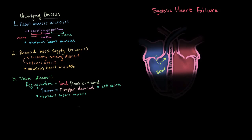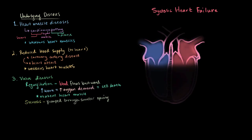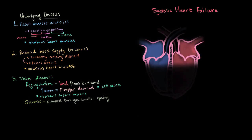The other valve disease is stenosis, which means blood is pumped out through a smaller opening, making it a lot harder to pump blood — like trying to squeeze water through a super small nozzle. Just as with regurgitation, the heart has to work harder to maintain the same blood supply, and more work means more oxygen demand that can't be met, so more cells die off.